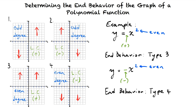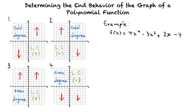For a complete understanding of this topic, let's try a couple more examples. Given f of x equals 4x to the fourth minus 3x squared plus 2x minus 4, what is the end behavior of the graph of this function? The degree is 4, which is even, and the leading coefficient is positive, so that means that both ends rise.